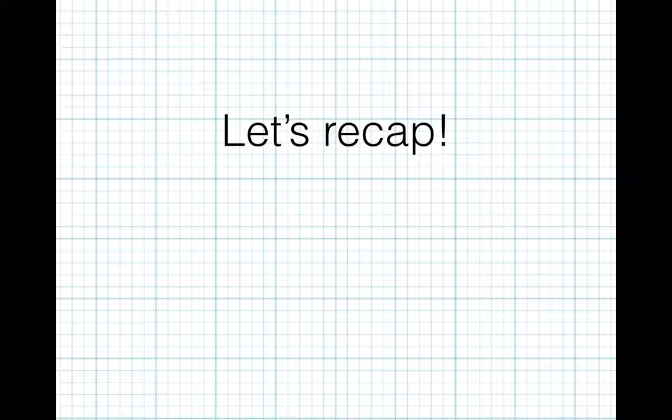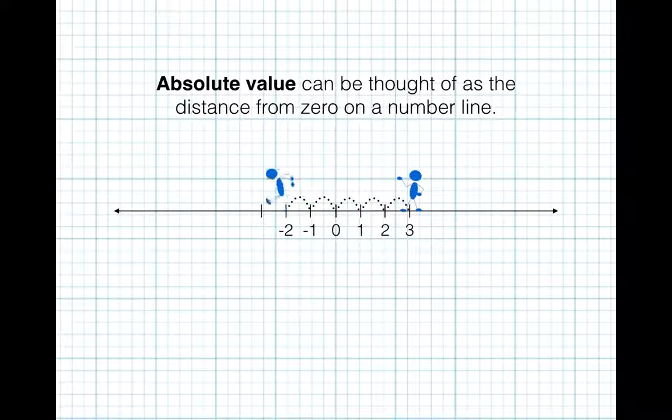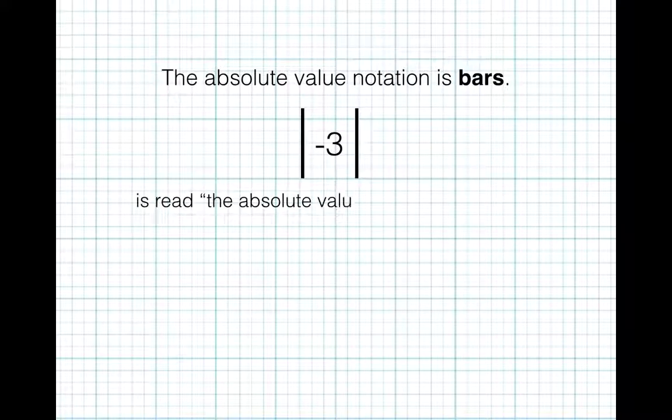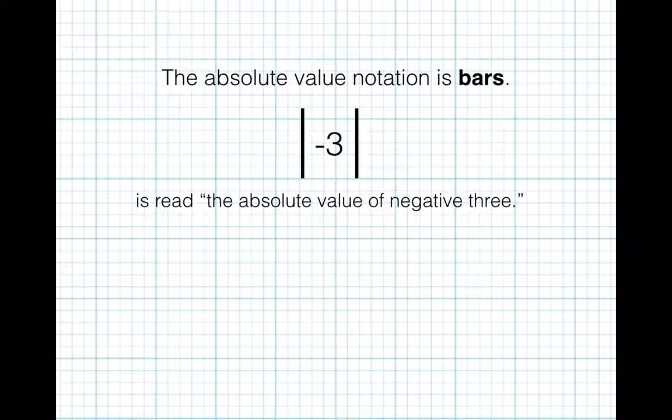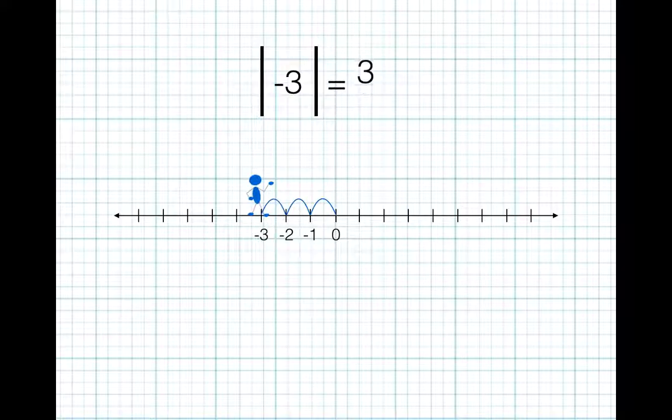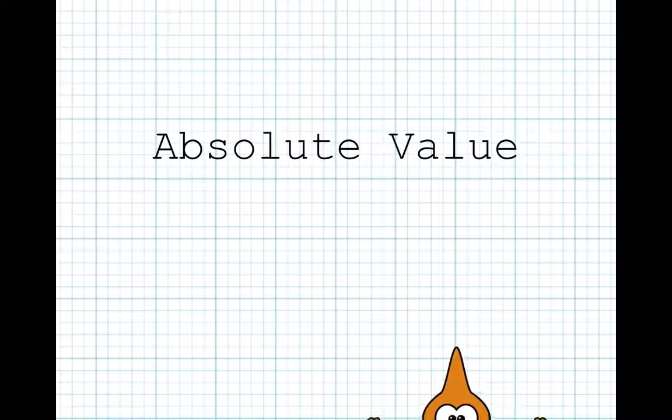Let's recap. Absolute value can be thought of as the distance from 0 on a number line. The absolute value notation is bars. So this is read the absolute value of negative 3. The absolute value of negative 3 is 3, since negative 3 is 1, 2, 3 units away from 0 on a number line. And that's it. Now you're an expert in absolute value.